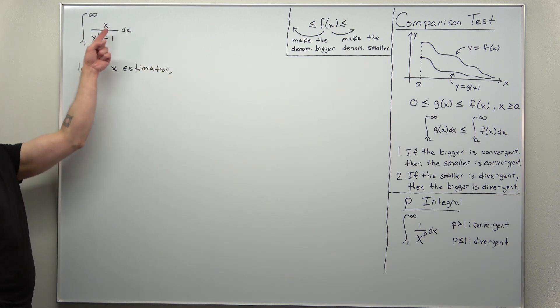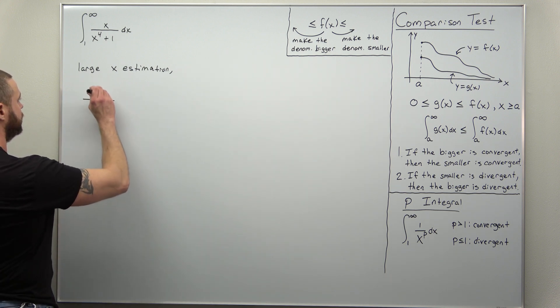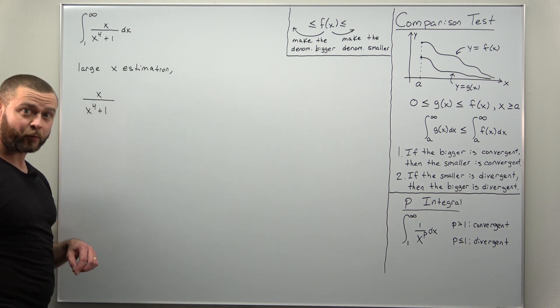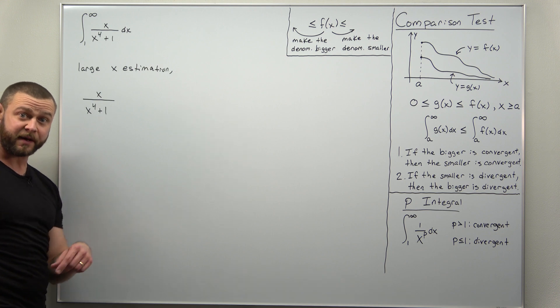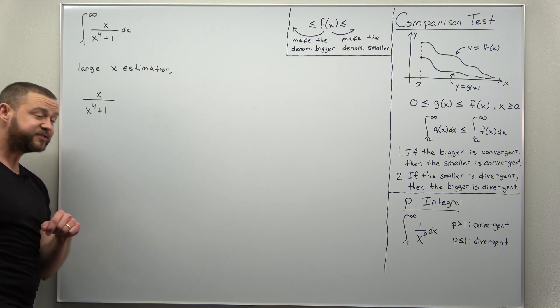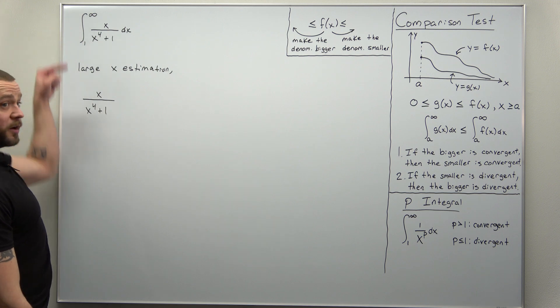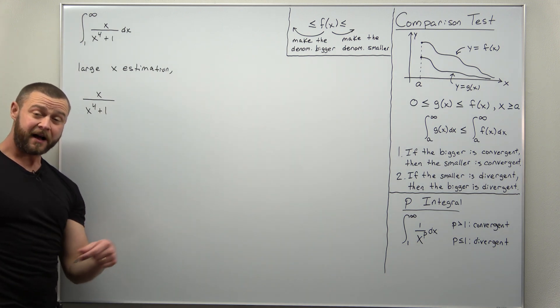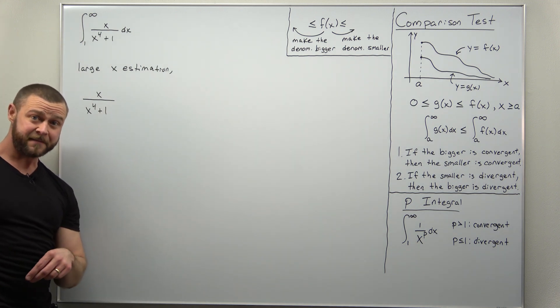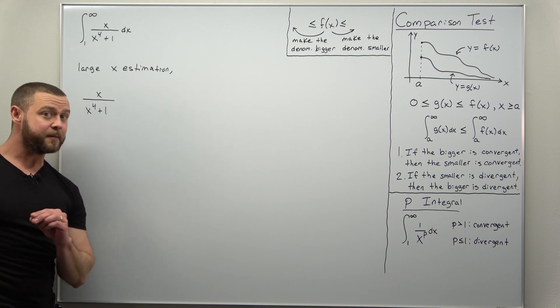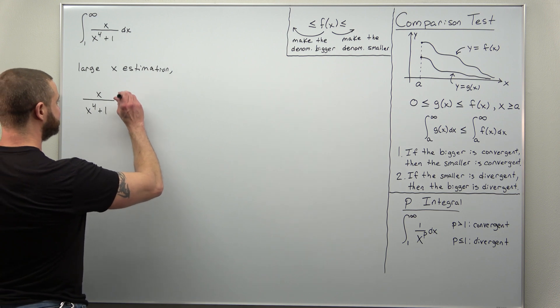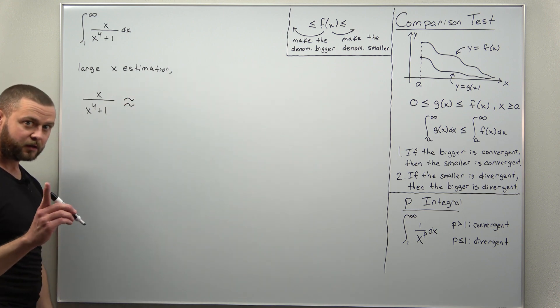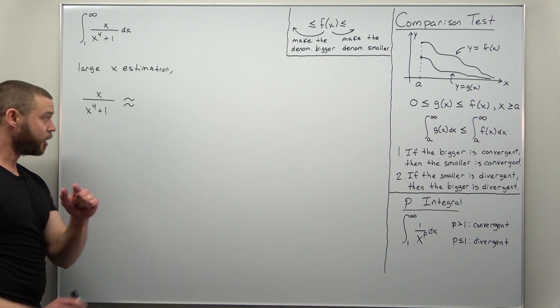Alright, so what we're going to do is take a look at our function, which is x divided by x to the fourth plus one. And we're going to imagine what happens when x becomes really big. Notice why that makes sense. We have an improper integral from one to infinity. Your values of x approach infinity. And approaching infinity, those are very big values or large. So, we're going to say this is approximately equal to for large x.